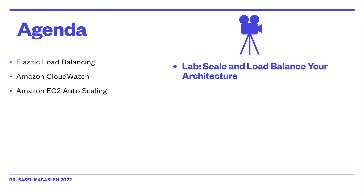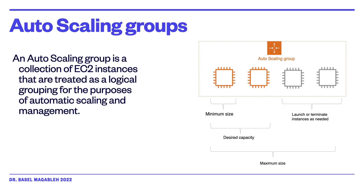In auto scaling, there are several scaling options: manual, scheduled, dynamic or on-demand, and predictive. An auto scaling group is a collection of EC2 instances treated as a logical group for the purpose of automatic scaling and management. You have two types of scaling: scaling in and scaling out. With scaling in, you reduce the amount of resources by terminating instances. With scaling out, you increase the number of EC2 instances to meet demand.